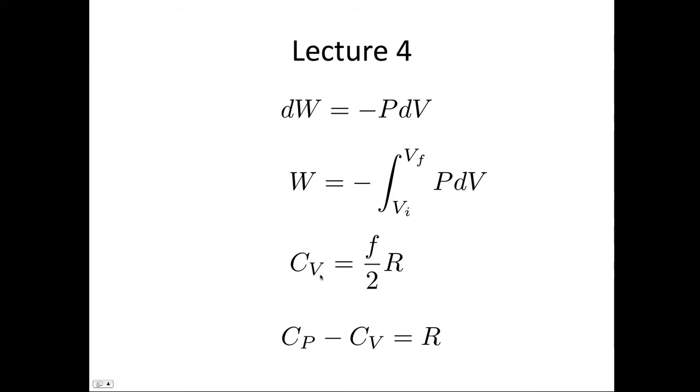We saw that the specific heat at constant volume was given by f/2 R, and the specific heat at constant pressure is equal to R plus CV, or CP minus CV equals R. These let you calculate the heat transfer in the constant volume or constant pressure case. The heat transfer is just given by n c ΔT.